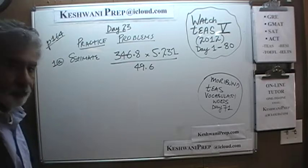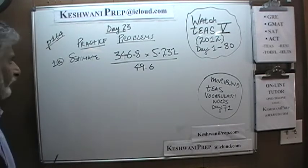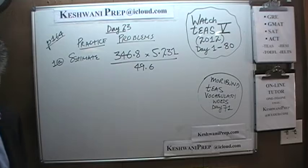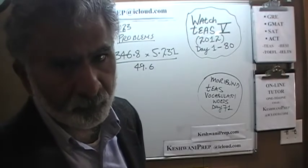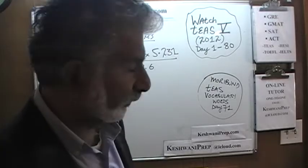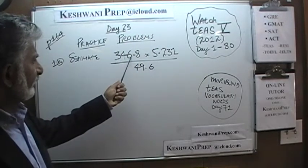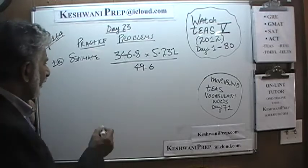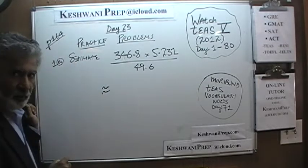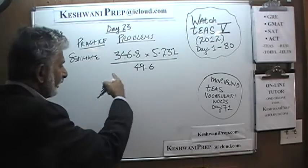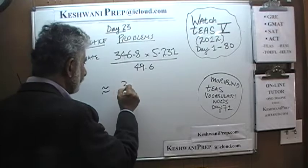The very first problem, as you can see on the blackboard, it is already there. It simply says: estimate this quantity. An estimate means exactly what it says — it does not require precision, which is why it's called estimation. So: 346.8, we can round that to 350. This is an approximation; the result is not the exact value, it's going to be an approximation.